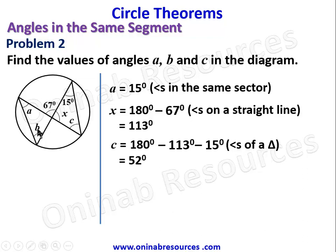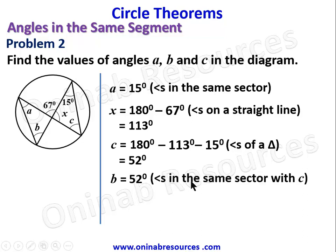We already established that c is equal to b, so b is equal to 52 degrees, the reason being angles in the same sector with c. With this we have gotten the values of a, b, and c, which brings the solution to problem two to an end.